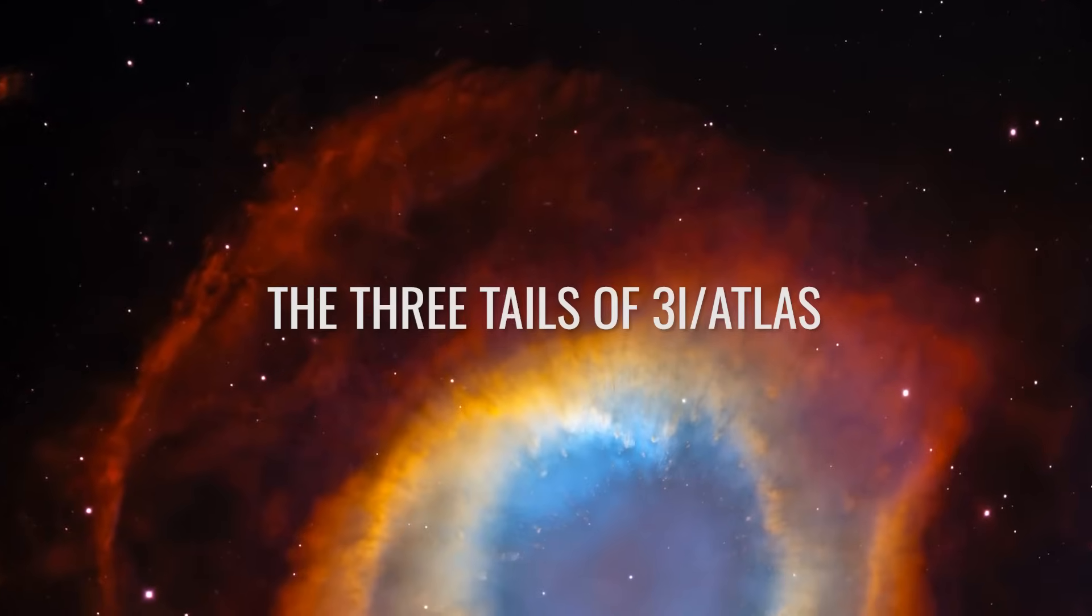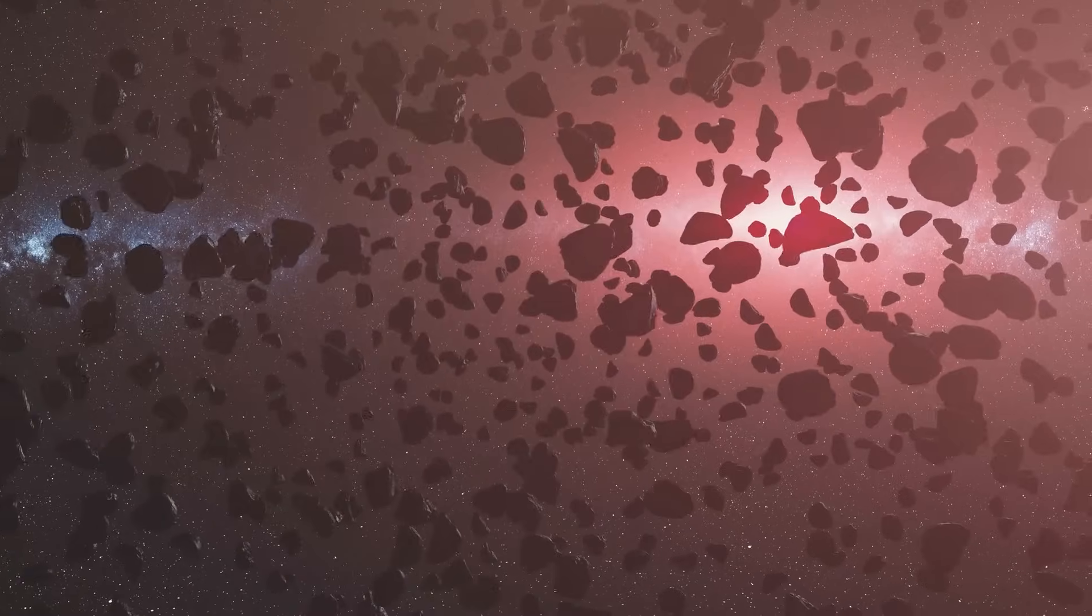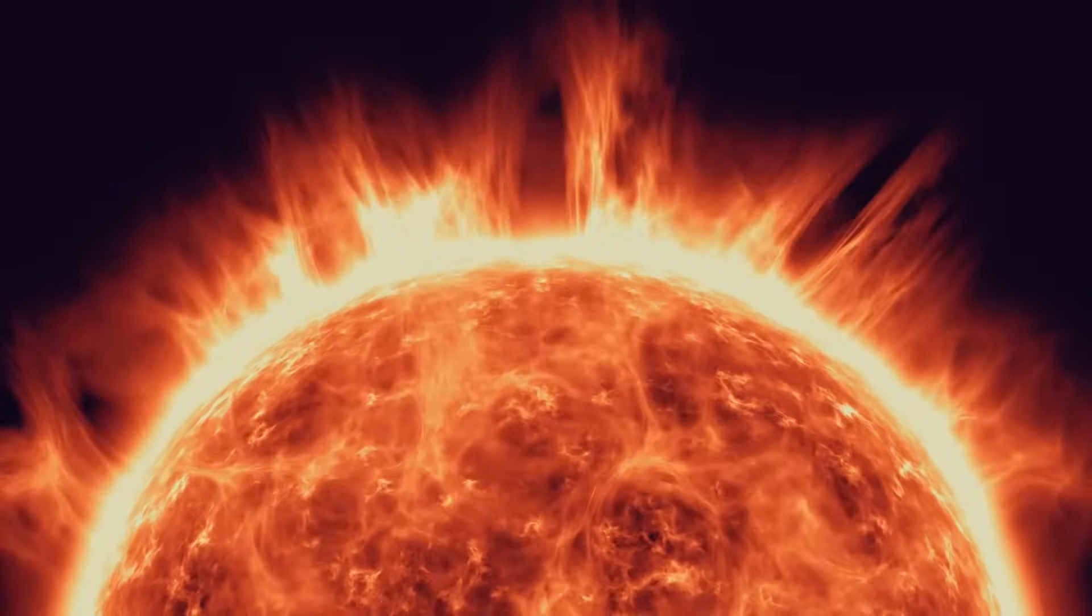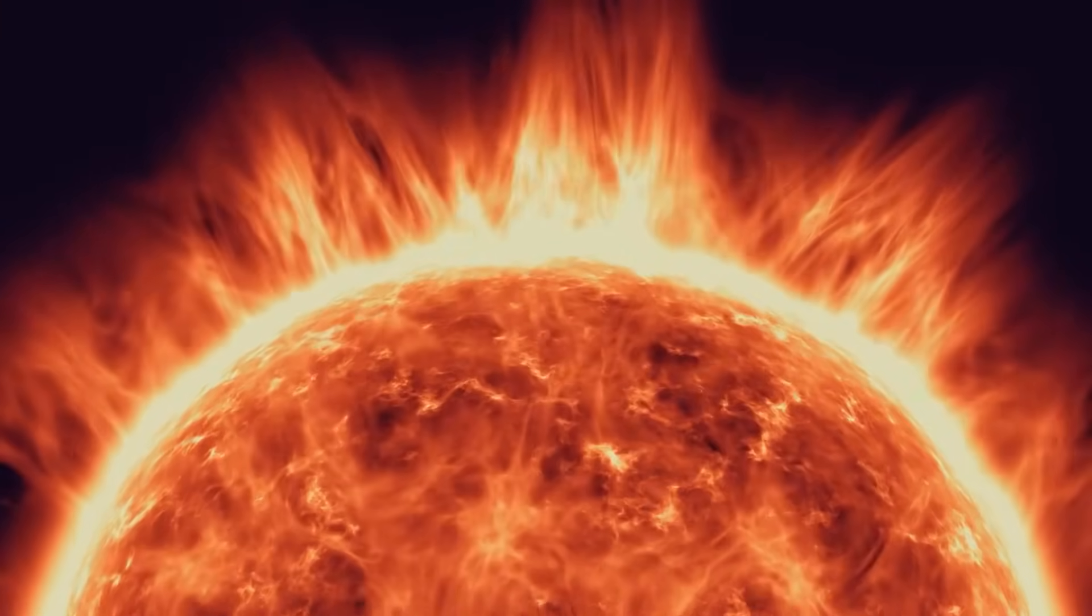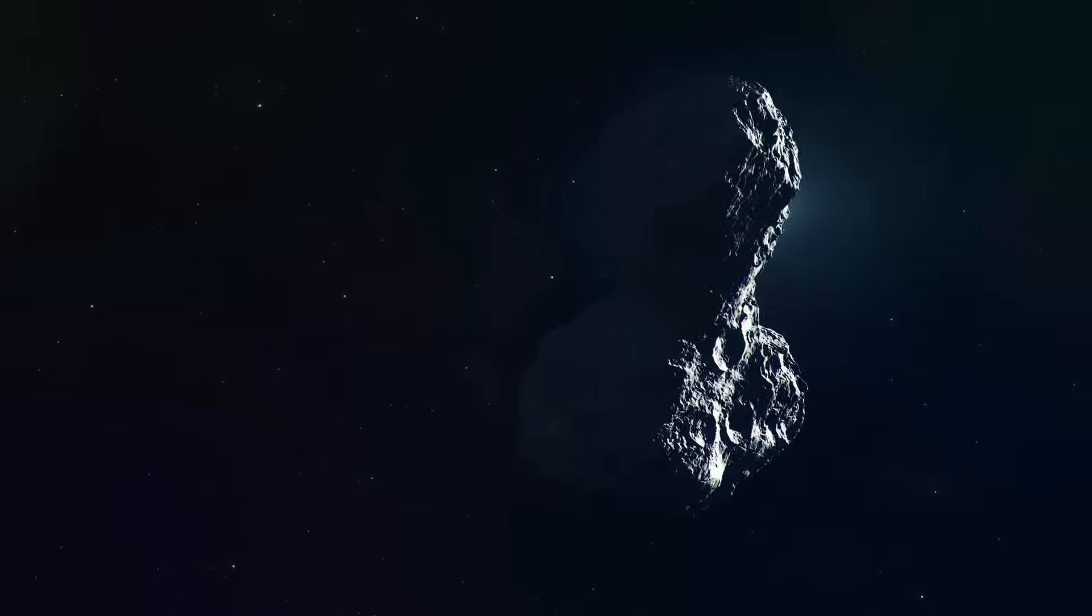The Three Tails of 3i Atlas: Classic comets usually have two tails, one made of gas and one made of dust, both of which are typically pushed away from the nucleus by the solar wind. But with 3i Atlas, something else is happening.